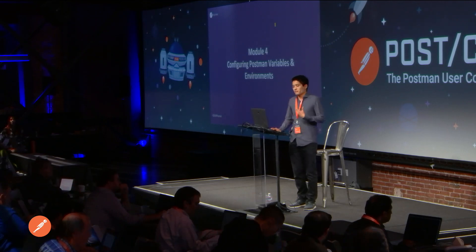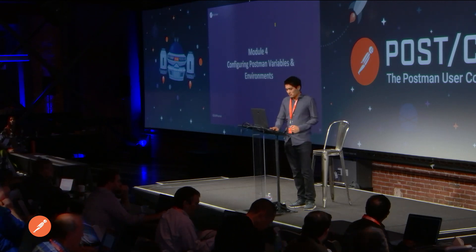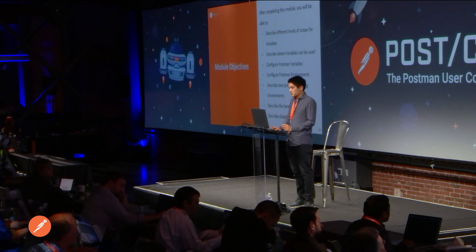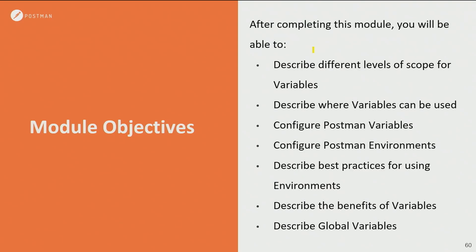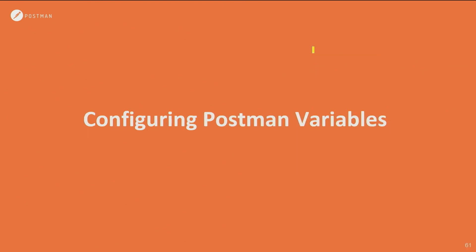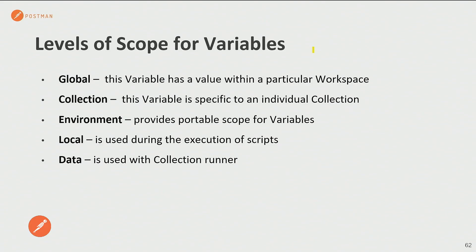Let's take a look at variables and environments — this is where we'll start to get into more detailed functionality. In this chapter, we're going to talk about the different levels of scope with our variables. It's important to understand scoping and also where we can use our variables. We'll configure variables and environments where we'll set values, talk about best practices for using environments, and the benefits of using variables in general.